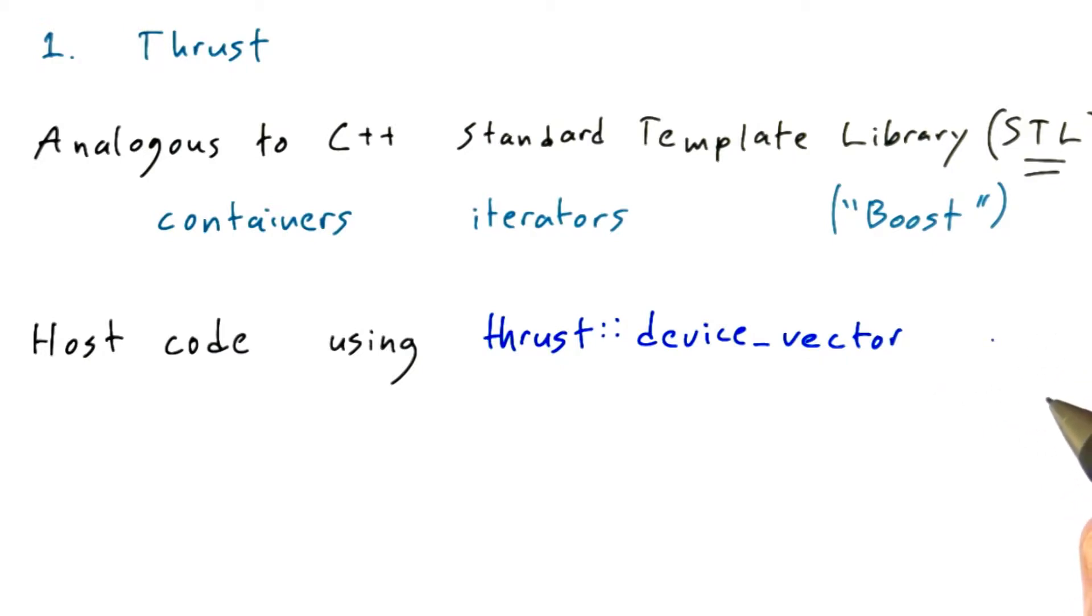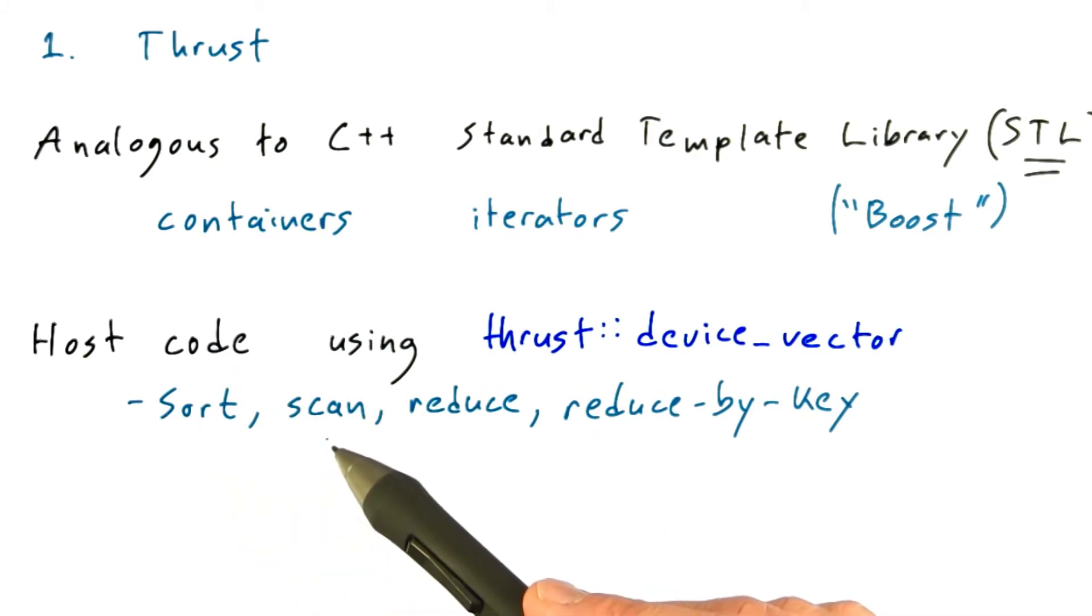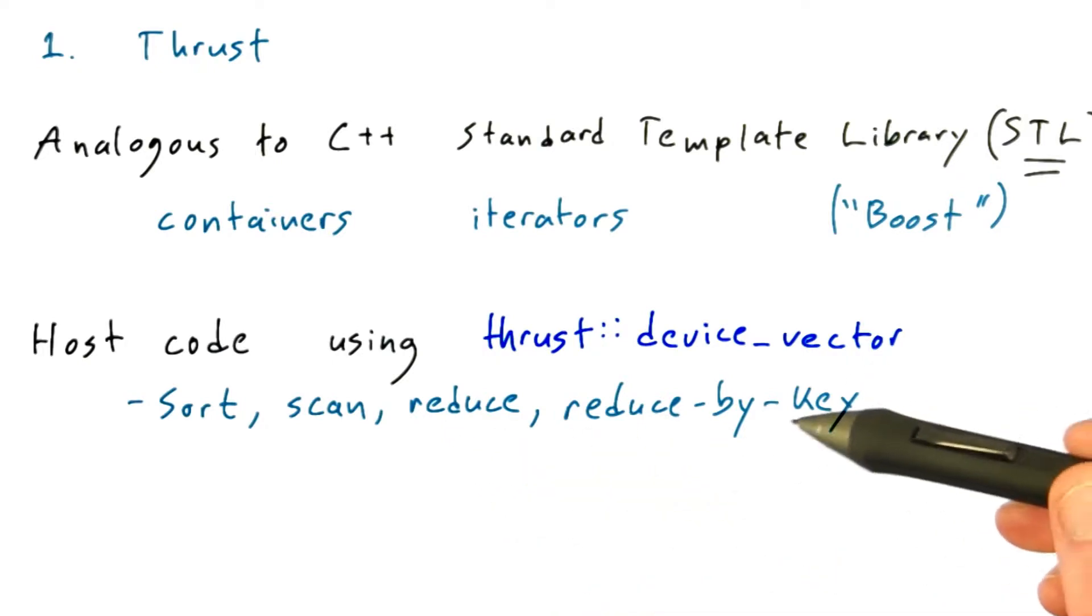Once your data is in a device vector, you can do a bunch of things trivially. You can sort the device vector, or perform a scan operation on it. You can do a reduction operation, or a reduce by key operation, where you actually take a vector and reduce it according to a key that's in another vector.